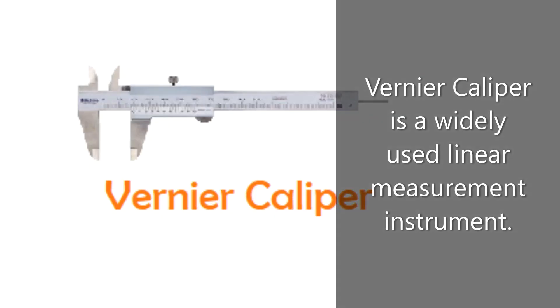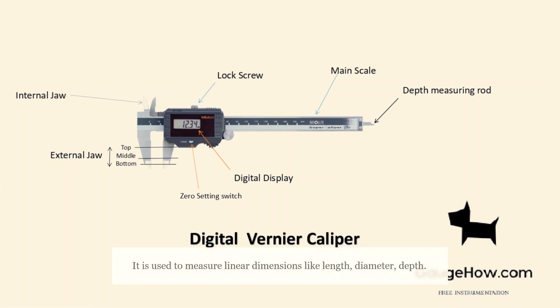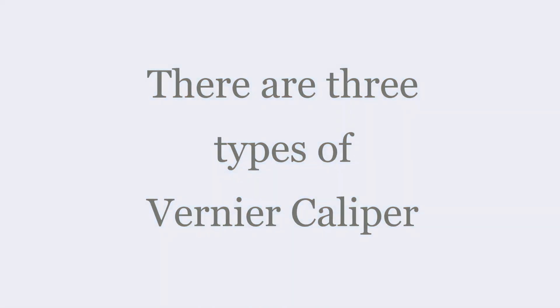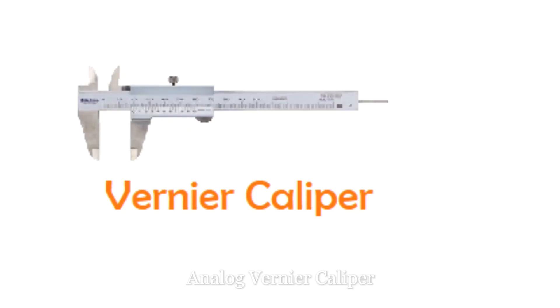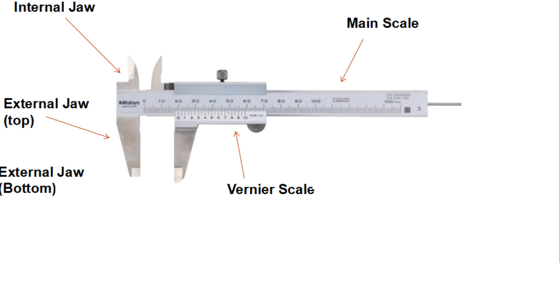Vernier Caliper is a widely used linear measurement instrument. It is used to measure linear dimensions like length, diameter, and depth. There are three types of Vernier Calipers: Analog Vernier Caliper, Dial Vernier Caliper, and Digital Vernier Caliper.